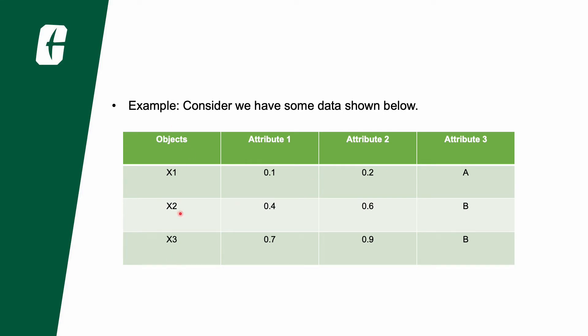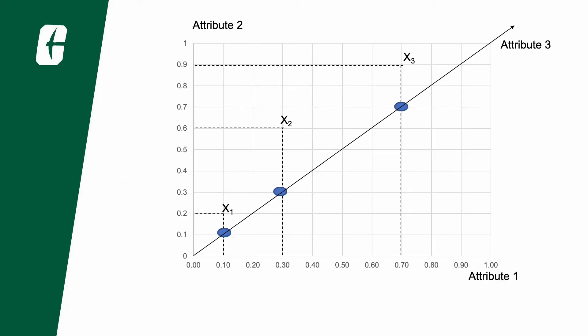I've taken three objects along with three attributes and I have marked them with some values. Now we need to plot these in space by drawing coordinates. As we have three attributes, we'll be having a three dimensional space. Here you can see the graph. I've plotted the objects into the space based on the values of their attributes.